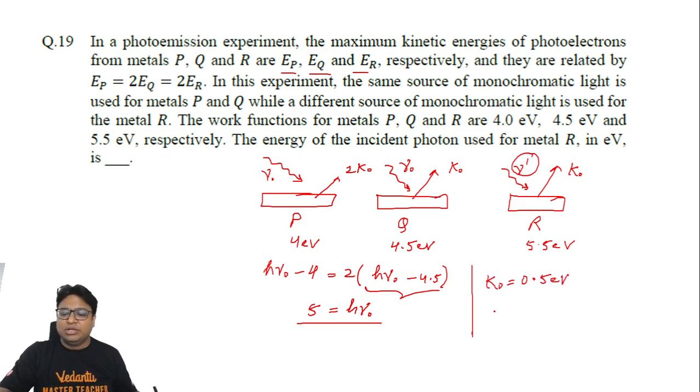The moment you have this value, you can now write hν' minus 5.5 equals K₀, which means hν' is 5.5 plus K₀, which is 6.